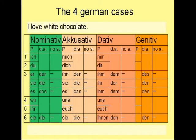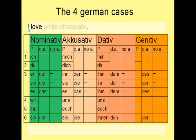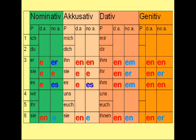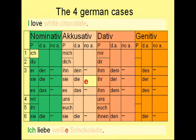Let's try: 'I love white chocolate.' White chocolate is now in the accusative case, because after the verb 'love' follows the accusative case — white chocolate is the direct object, and 'I' is the subject in the nominative case. Looking at the table for feminine accusative with no article, the ending is E. So the sentence reads: Ich liebe weiße Schokolade.